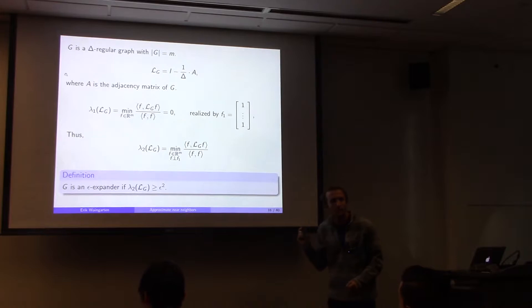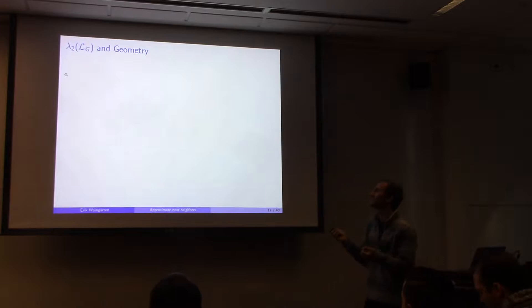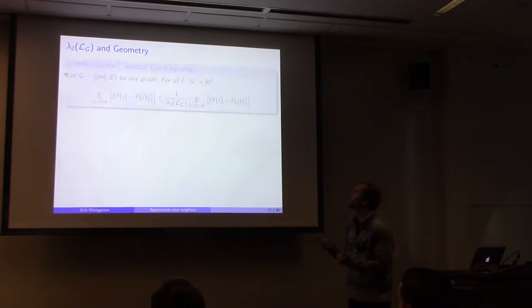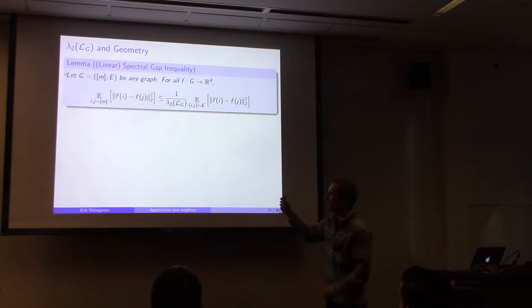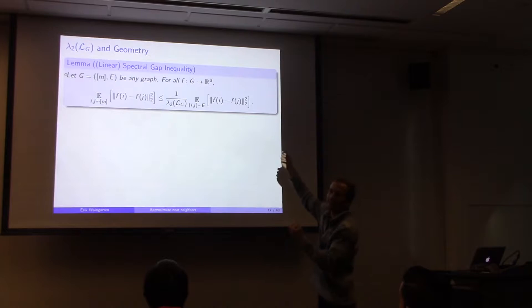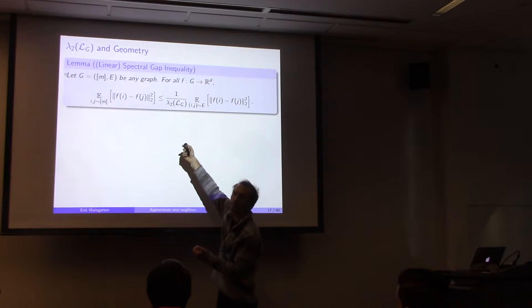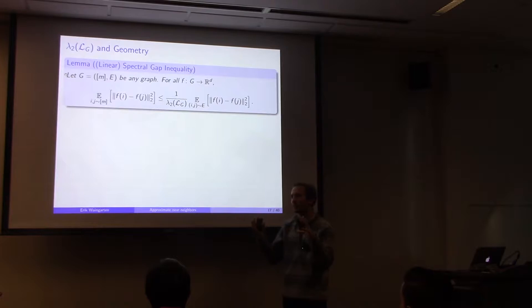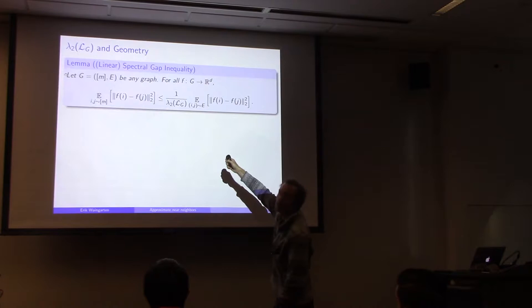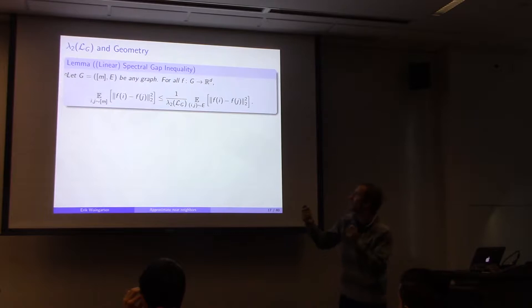Here's the linear spectral gap inequality — a nice way to translate between lambda_2 and geometric concepts. For any graph on m vertices mapped into R^d, if I sample two random vertices and compute the L2 distance squared, that's always at most (1/lambda_2) times the same experiment but sampling a random edge. So I can understand how spread out the graph is by understanding how spread out the edges are.